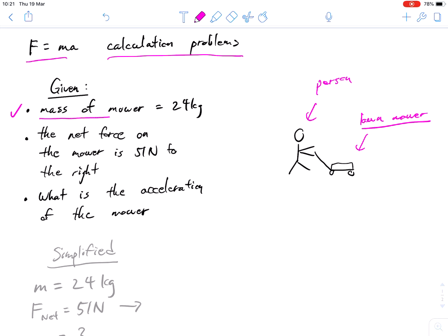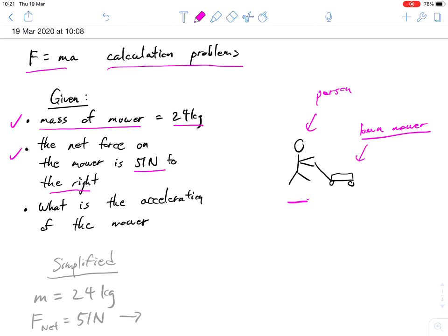So we're given a few pieces of information. We're given that the mass of the mower is 24 kilograms. We're also given the net force on the mower is 51 Newtons to the right. So that means this person is pushing in the right hand side direction. I'm just going to put an R to represent right.